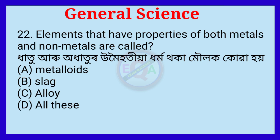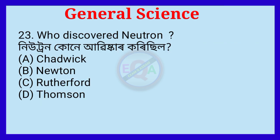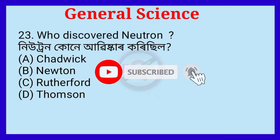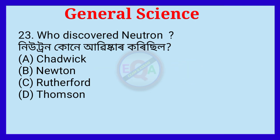Question number twenty-two. Elements that have properties of both metals and non-metals are called? The correct option is Metalloids.